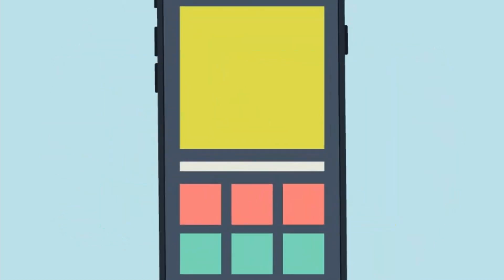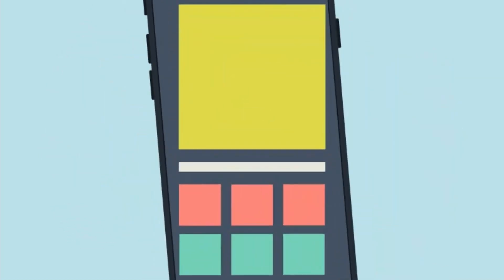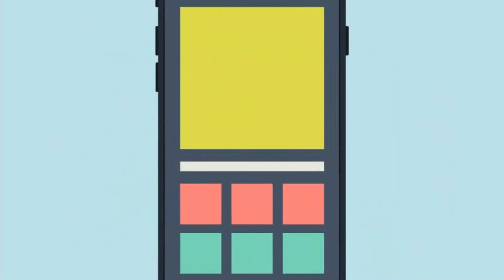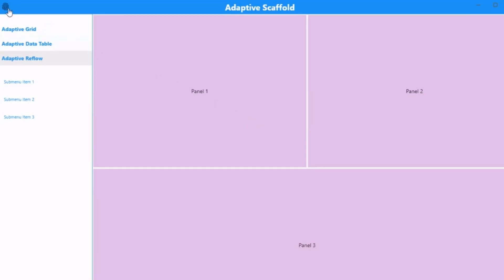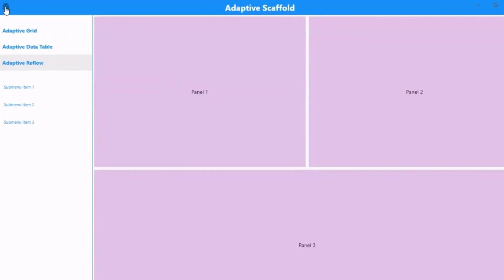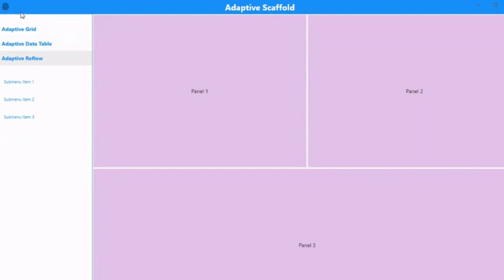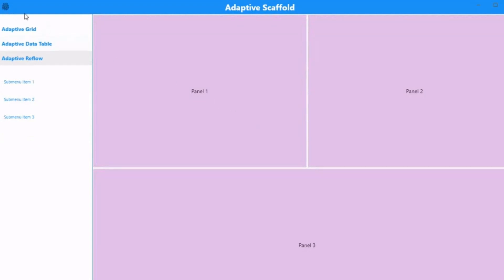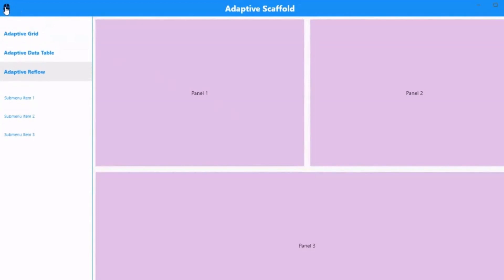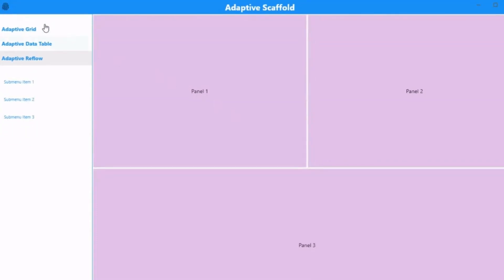Now for adaptive design: as discussed before, adaptive design means your application should run according to platform-specific things. In Flutter, if you want to develop your application according to device specifications, there are some widgets and options that help you create adaptive applications. Let's discuss the most important ones.